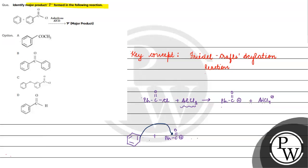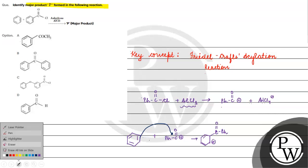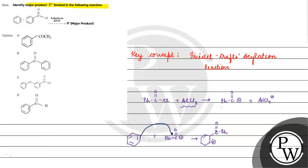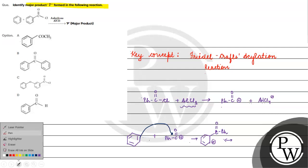When the electrophile attacks the benzene ring, basically an arenium ion species will form. We will see different resonating structures in the process.